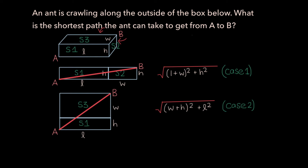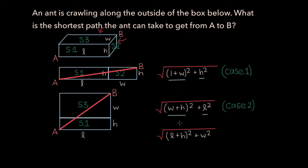The third and final scenario is the hardest to figure out. Notice that in case 1, L and W are grouped together and H is isolated; in case 2, W and H are grouped together and L is isolated. Intuitively, in case 3, L and H should be grouped together and W isolated — the only remaining combination. Pause the video and consider how you would unfold the box to produce this formula as the diagonal length from A to B.